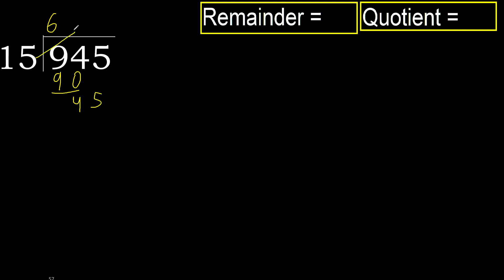15 multiplied by 4 is greater, so multiplied by 3 gives 45 — that is not greater, ok. Subtract.